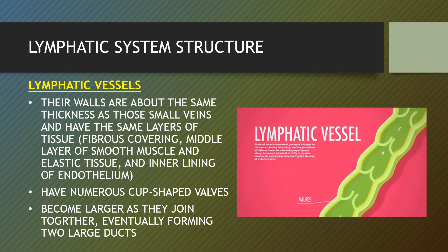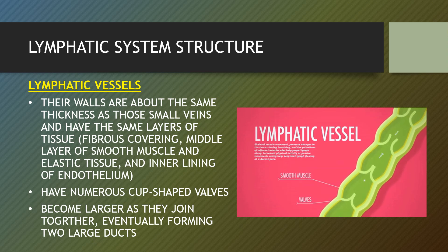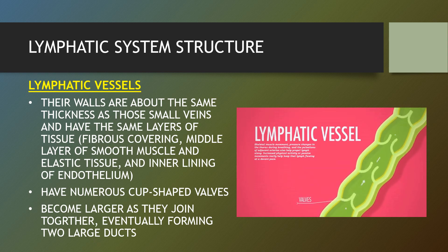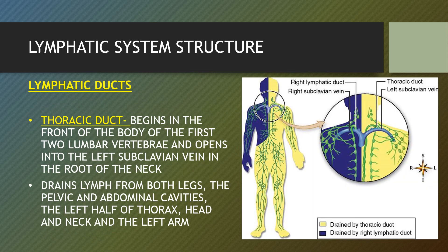The lymphatic vessels have walls about the same thickness as those of small veins, with the same layers of tissue: a fibrous covering, a middle layer of smooth muscle and elastic tissue, and an inner lining of endothelium. They have numerous cup-shaped valves and become larger as they join together, eventually forming two large ducts. The vessels empty into lymphatic trunks, also known as collecting vessels, and these eventually converge to form the right lymphatic duct and the thoracic duct. The thoracic duct is much larger and drains lymph from the rest of the body.